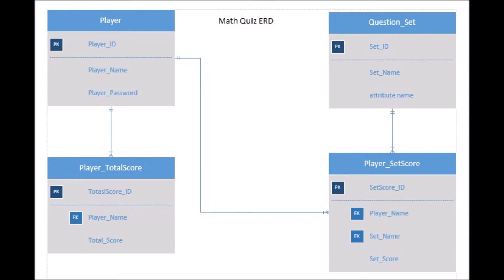That's all for table. Now let's talk about relationship. For relationship between player and player set score, one player can have at least one set score, meanwhile one set score can only hold one player's data only.